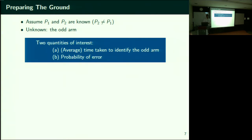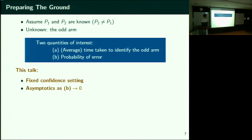What people generally do is fix one of these quantities and quantify the other. In this talk, I'm going to fix probability of error and then tell you how the average time to identify the odd arm looks as a function of that probability of error. I'll let the probability of error go to zero and tell you at what rate the time grows. Smaller the probability of error, perhaps longer you will wait — you have to be very confident. At what rate does it grow? Can we capture that growth rate?